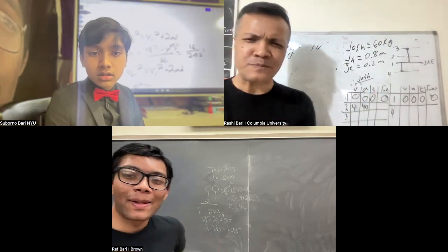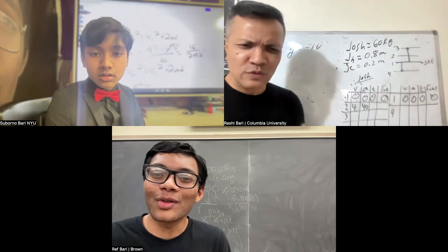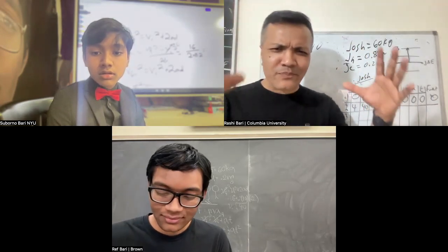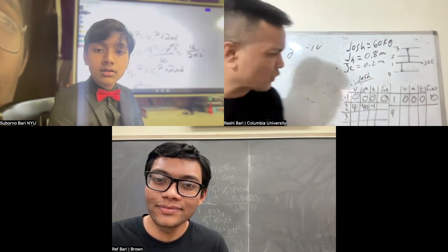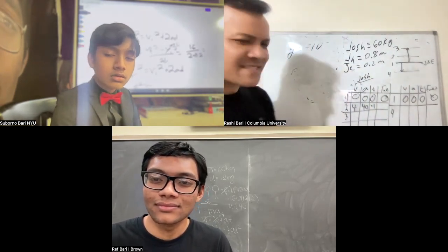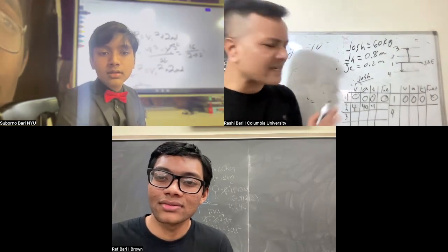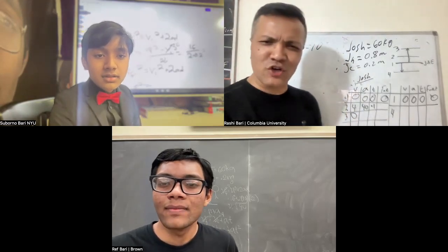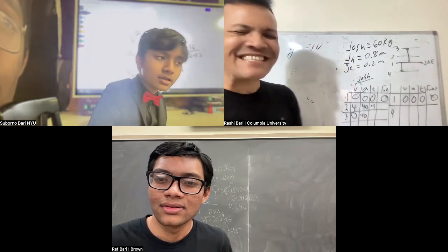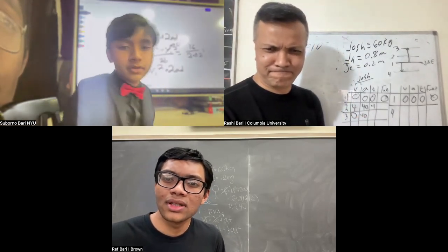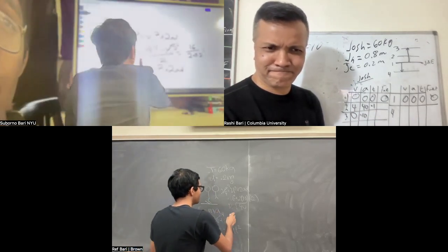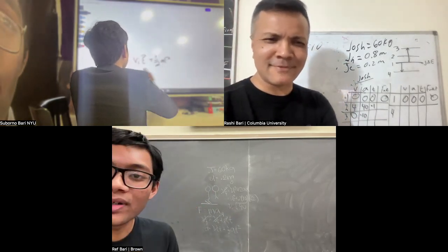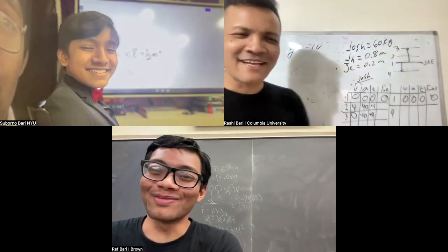Find time at location two — 0.1. Very nice. What is the velocity at location three for Josh? Zero. What's the acceleration at location three for Josh? Minus 10. What is the time at location three for Josh? 0.4 seconds.